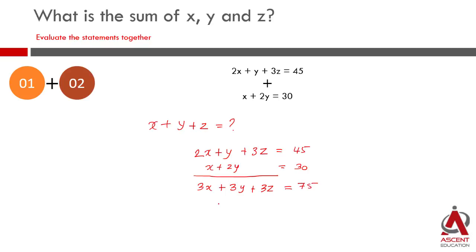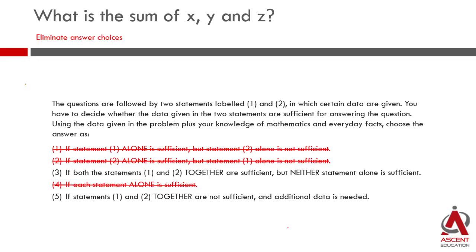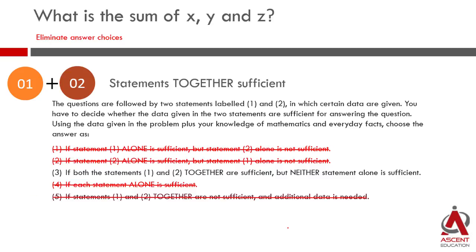3x plus 3y plus 3z. You can get x plus y plus z pretty straightforward. The right hand side is going to become 75. So x plus y plus z equals 25. We did not know x, y, z separately, but we could get an answer for x plus y plus z with a unique value. So the two statements together are sufficient to answer the question. We were down to just two answer choices, either 3 or 5. Statements together are sufficient, so obviously answer choice 3 is the correct answer.